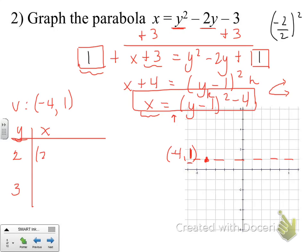I take y equals 2 and plug it into my equation. Following order of operations, I get 1 inside the parentheses, square that to get 1, and get an x value of negative 3. Remember, this is an ordered pair: x first, then y. So the point I'm plotting is (-3, 2), right here on my graph.